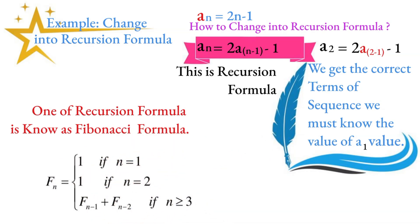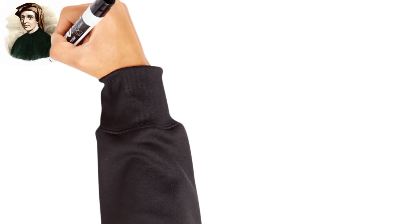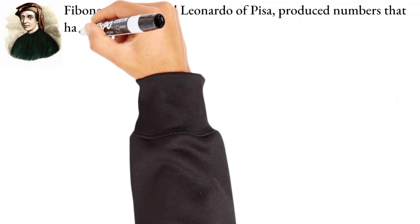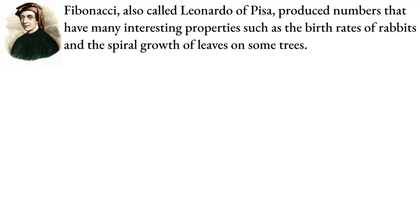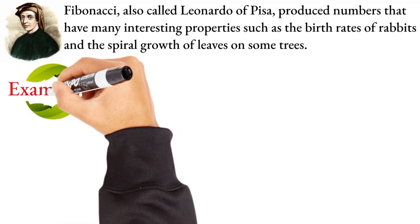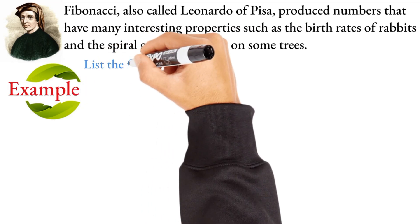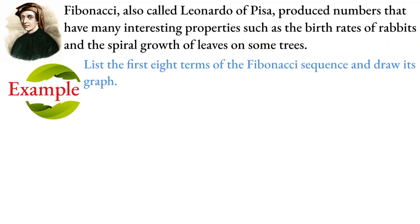The Fibonacci sequence is defined by fn equals f(n-1) plus f(n-2). This recursion formula defines the Fibonacci sequence. The mathematician who discovered it is well known for studying birth rates and growth patterns in nature, such as the growth of tree leaves. With f1 equals 1 and f2 equals 1, list the first eight terms of the Fibonacci sequence and draw its graph.